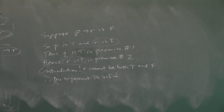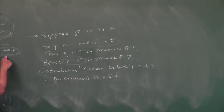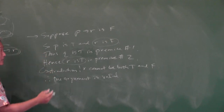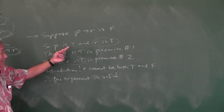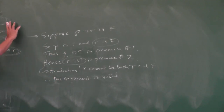The first sentence is always: suppose the conclusion is false. Then take that information back into the premises until you get a contradiction. And there you go — that's the indirect proof.